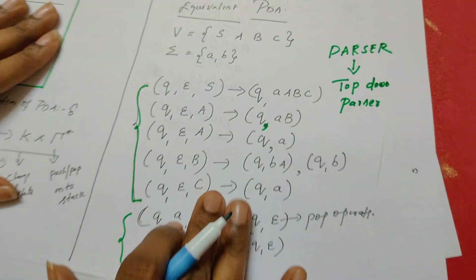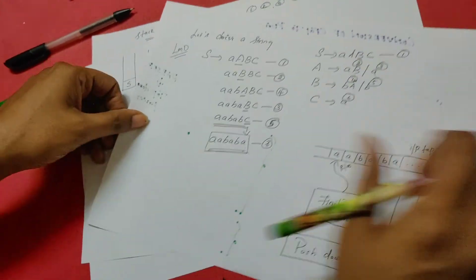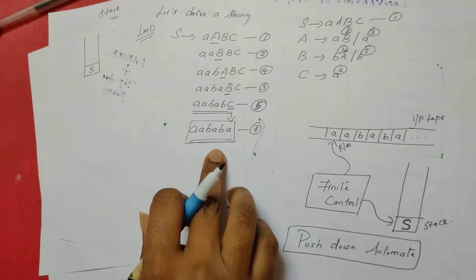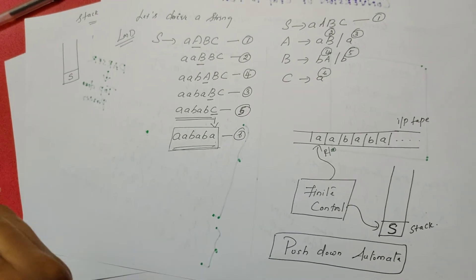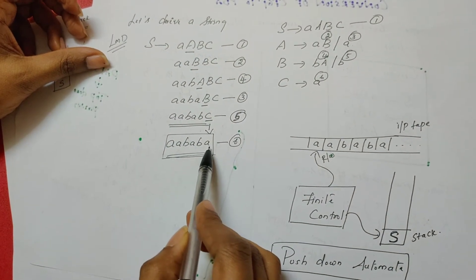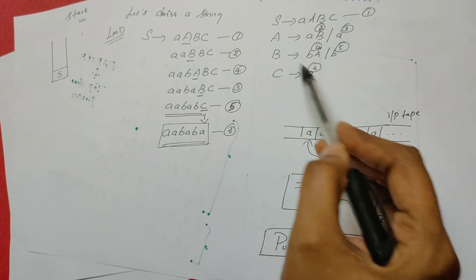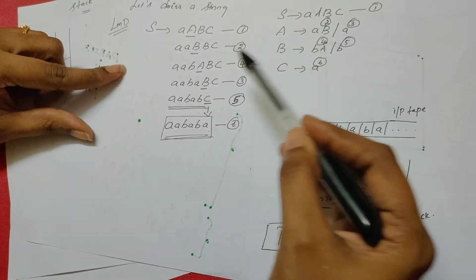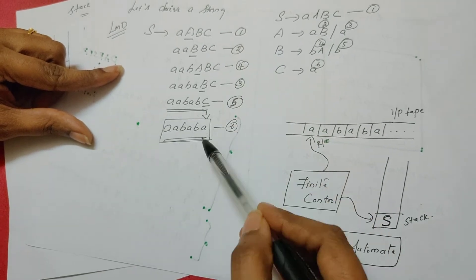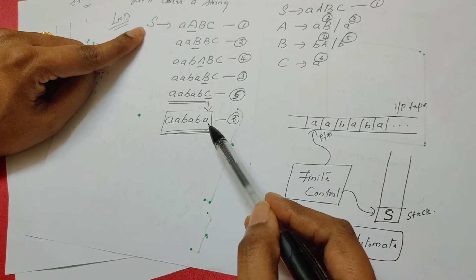Let us try to understand the working of this PDA with an example. I have considered the same grammar and derived the string a, a, b, a, b, a from it. The rules have been numbered for convenience. Any derivation of the string should start from the start symbol S.